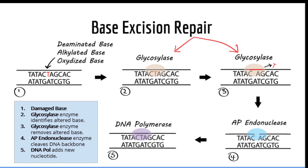Glycosylase then recruits an enzyme called AP endonuclease, which cuts the phosphodiester backbone of DNA and removes the rest of the nucleotide components — namely the ribose and phosphate group left behind by glycosylase. Here we can see our AP endonuclease cutting the DNA backbone. Finally, DNA polymerase comes in and adds the missing nucleotide, and you are left with normal DNA.